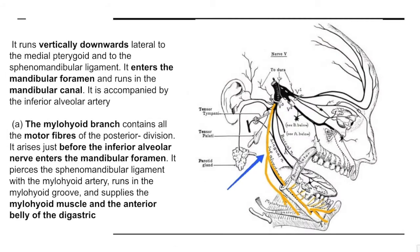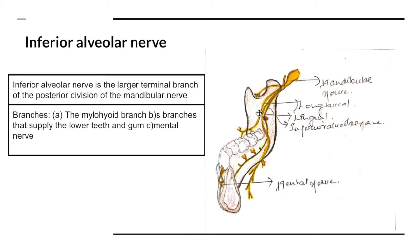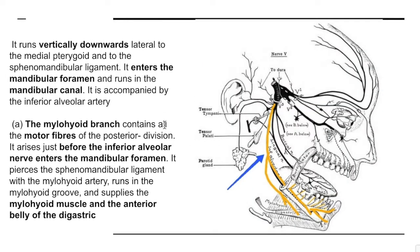In its course, the inferior alveolar nerve runs vertically downwards lateral to the medial pterygoid and the spinomandibular ligament. It enters the mandibular foramen on the medial surface of the mandible and runs in the mandibular canal, accompanied by the inferior alveolar artery. The mylohyoid branch, given just before it enters the mandibular foramen, contains all the motor fibers of the posterior division. It pierces the sphenomandibular ligament with the mylohyoid artery, runs in the mylohyoid groove, and supplies the mylohyoid muscle and the anterior belly of digastric.